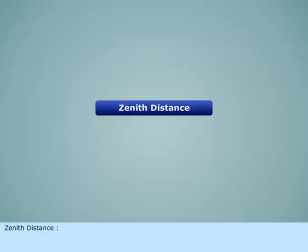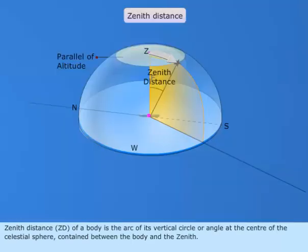Zenith Distance, or ZD, of a body is the arc of its vertical circle, or angle, at the center of the celestial sphere, contained between the body and the zenith.